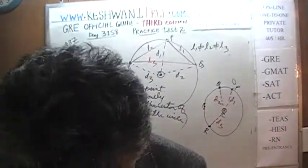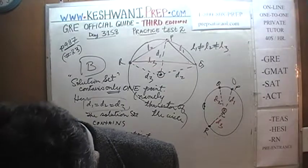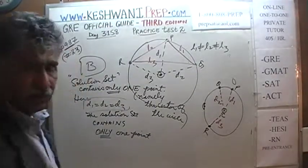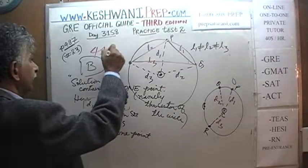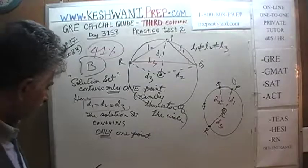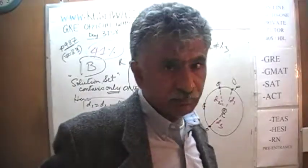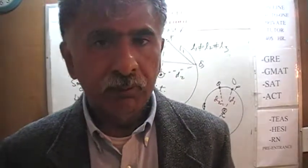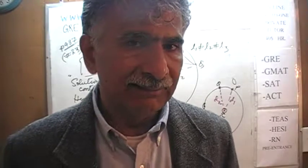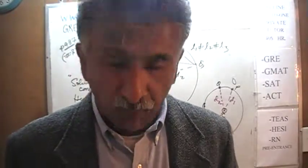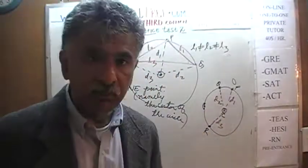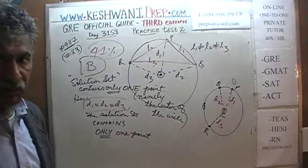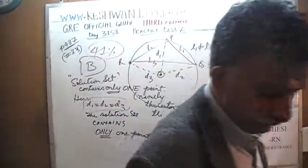The answer is B. This was number 23 — the solution set contains one point. The percentile was 41%. Again, about three-fifths of people had trouble with it because they do not take their time to understand the question properly. The wording is very important. I will meet you tomorrow for question number 24, the penultimate question — that is day 159. The day after tomorrow, day 160, we will finish this section of practice test number 2. Bye now.